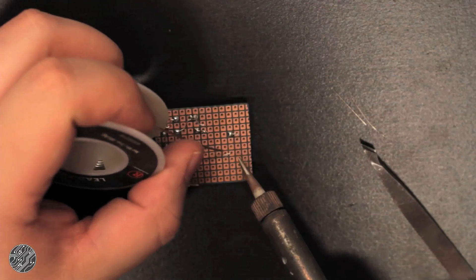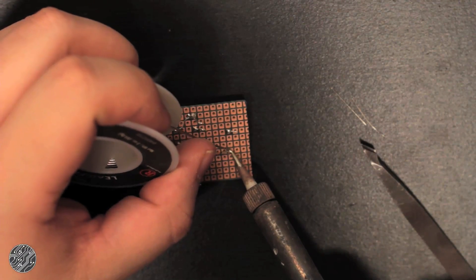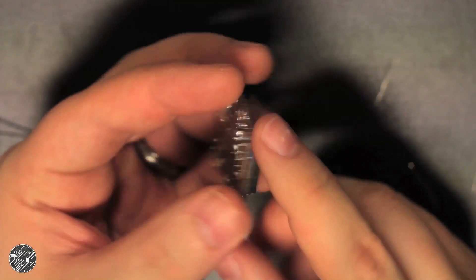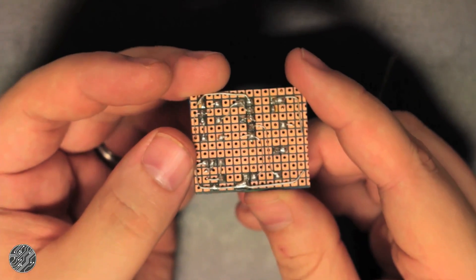This is also a good time to solder in sockets for any components you might want to replace down the road. In this case I'm socketing the delay chip, the voltage regulator, and output buffer transistor.